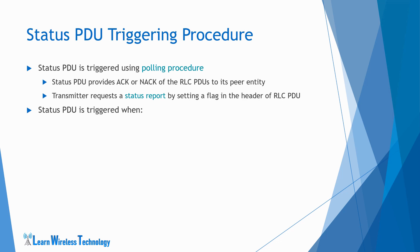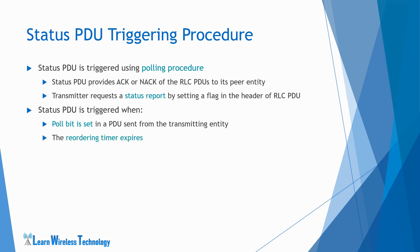The status PDU can be triggered by the receiver in two conditions. First, when polling is received from its peer entity — that is, the transmitting side entity initiates the polling procedure as it sets the P field of the RLC PDU header to 1 and polls its peer receiving entity. The status PDU is triggered when the poll bit is set in a PDU sent from the transmitter entity. You will understand this when we discuss the RLC PDU structure in coming slides. The status PDU is also sent when a failure in reception of PDU is detected, that is, the reordering timer expires which indicates a missing PDU at the receiver.